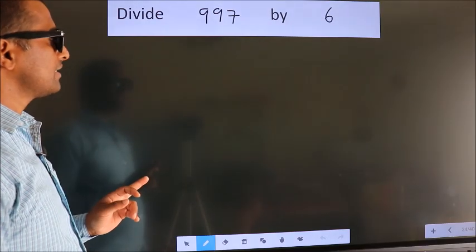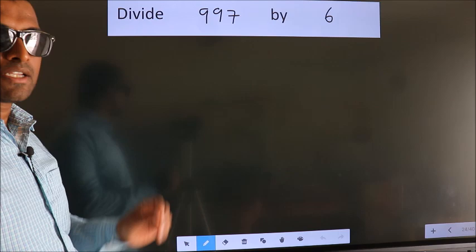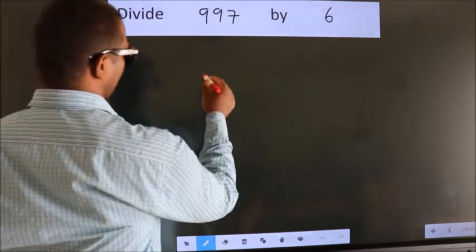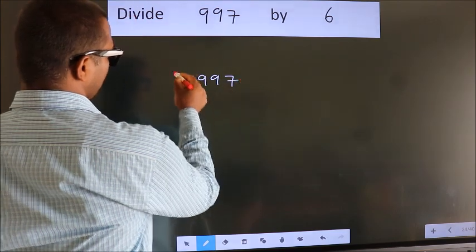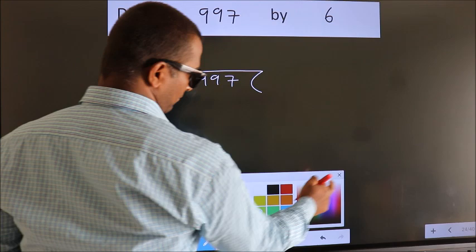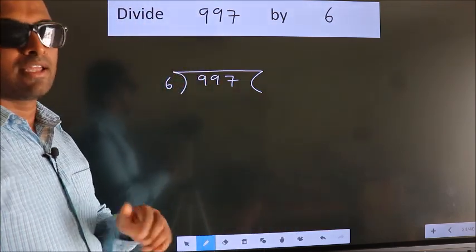Divide 997 by 6. To do this division, we should frame it in this way: 997 here, 6 here. This is your step 1. Next,